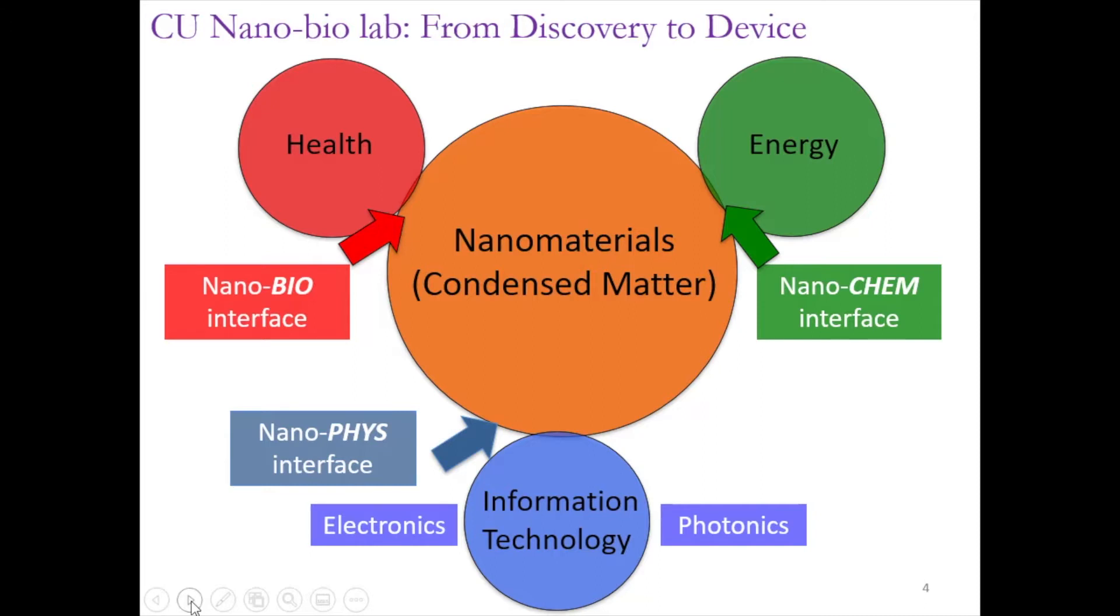For example, to develop biosensors, which I will talk about, or nanochemistry interface for developing better batteries and capacitors. Today, I'm going to use graphene as an example to describe a couple of areas that we work on. Graphene is one atom thick layer of carbon atoms, and we use this effectively for energy storage or biosensing applications or to make optical diodes.